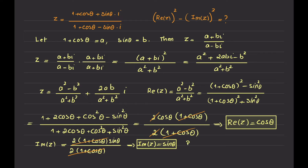The question asks for the real part of z squared minus the imaginary part of z squared. This becomes cosine theta squared minus sine theta squared, which is nothing except cosine 2 theta — and that is what we were supposed to show. I hope this video was useful for you. Until the next video, be safe and goodbye.